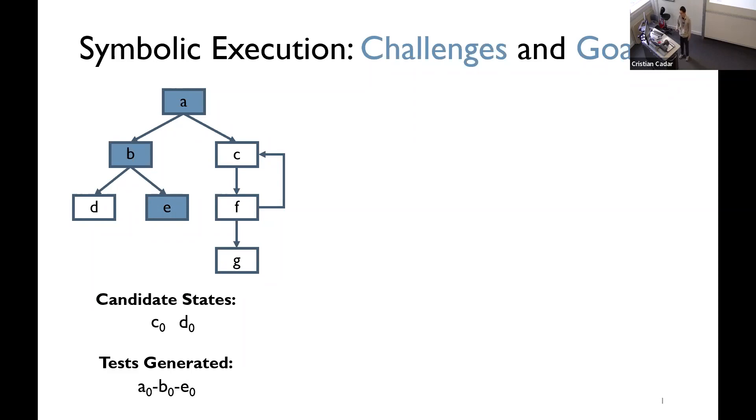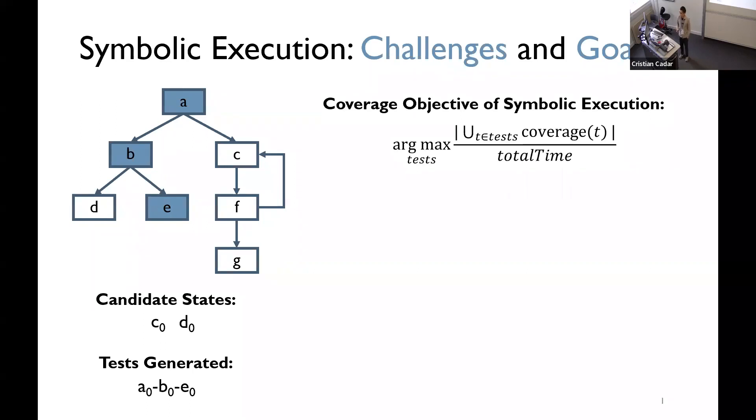That's roughly how it works, and to achieve maximum coverage for symbolic execution, we have an objective here. The goal of symbolic execution, to achieve higher coverage, is to generate a set of tests under the argmax, and the goal is to, for each test, we have a coverage function to measure the coverage of the test. And the goal is to achieve the maximum amount of coverage, given the total time spent on the execution.